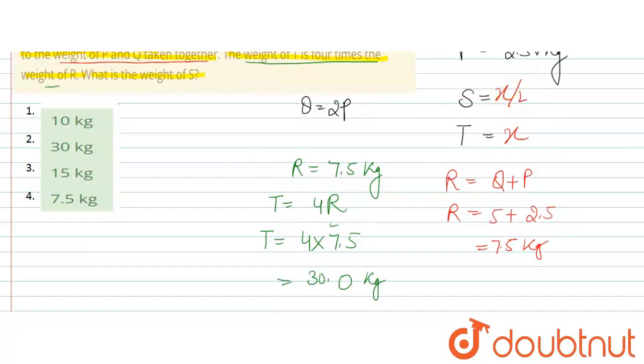So S का हो जाएगा X by 2. So यहाँ पर T का weight हो गया 30 kg. So S का weight हो जाएगा 30 divided by 2. That is equals to 15 kg.